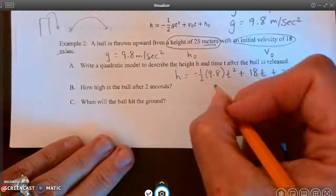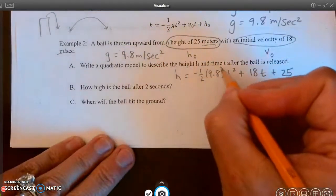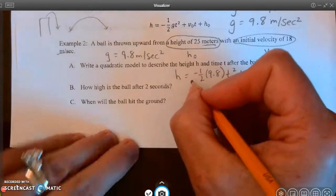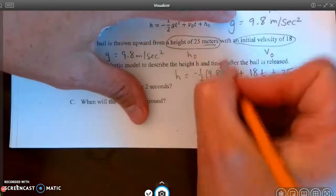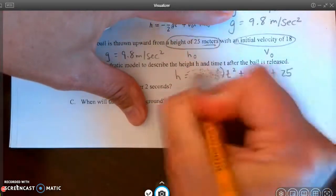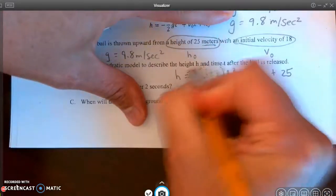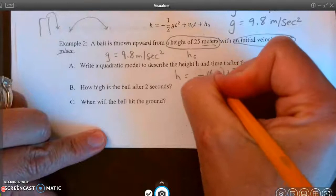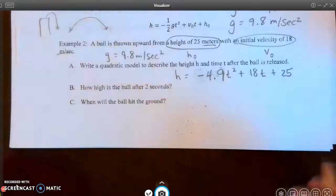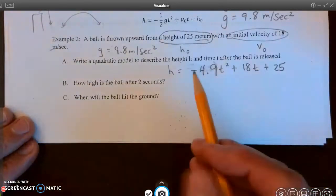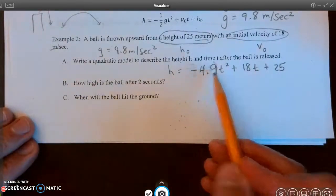All right, so the first thing I'm going to do here is I don't really like this negative one-half times 9.8, so I'm going to actually rewrite this. I'm going to erase that and write the negative one-half times 9.8. I know that half of 9.8 is 4.9, so I'm going to go ahead and change that to negative 4.9 t squared plus 18t plus 25. And that was for multiplying the negative one-half times the 9.8.